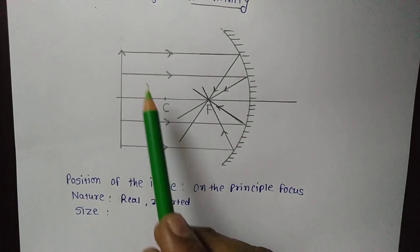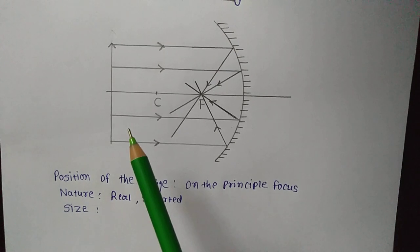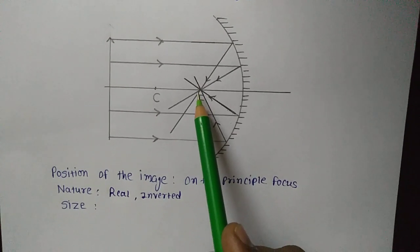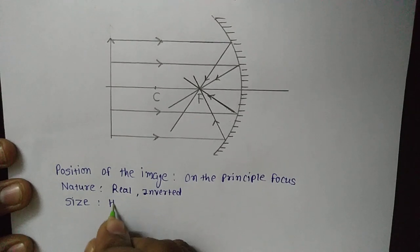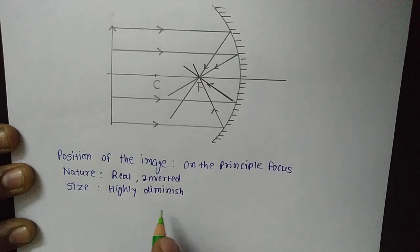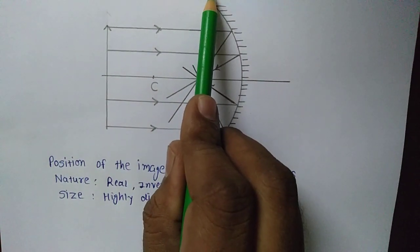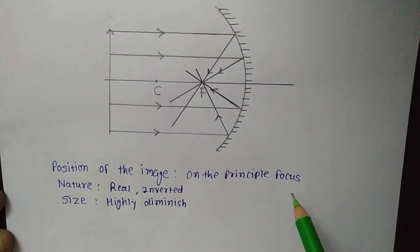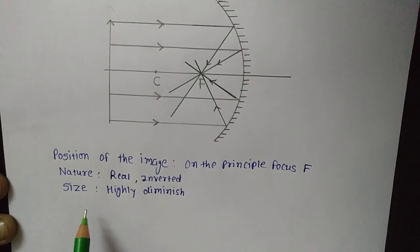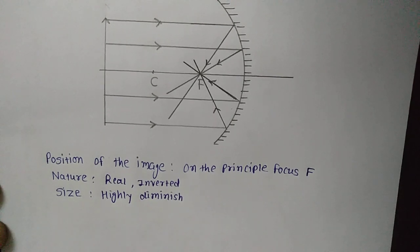Now what would be the size? If we take the image of the sun — the sun is the largest source of energy and occupies 98 percent of the space of our entire solar system — the size of the image will be highly diminished. So this is point number one: if we keep the object at infinity, the image will form on the principal focus F. Nature will be real, inverted, and the size of the image will be highly diminished.